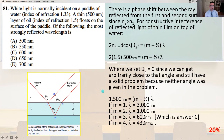No one said it would be easy. We're here on problem number 81 of physics GRE GR1777. White light is normally incident on a puddle of water with index of refraction 1.33. A thin 500 nanometer layer of oil with index of refraction 1.5 floats on the surface of the puddle.